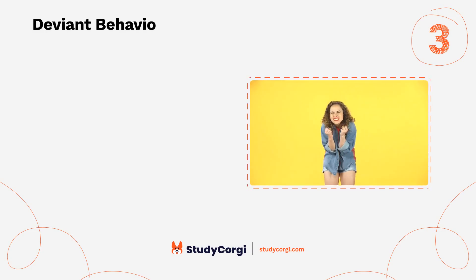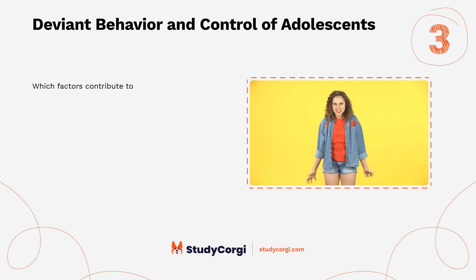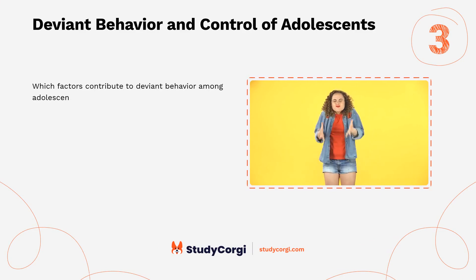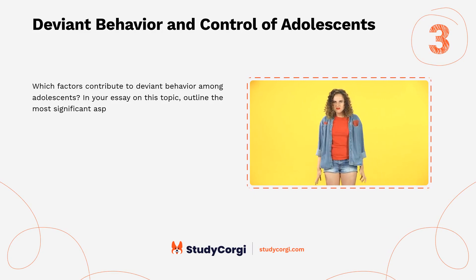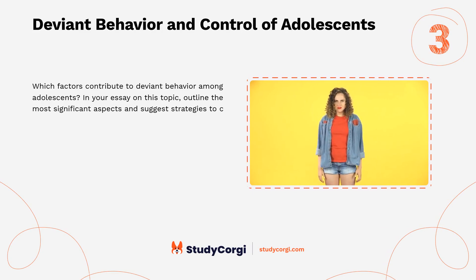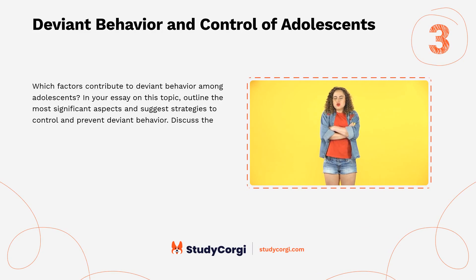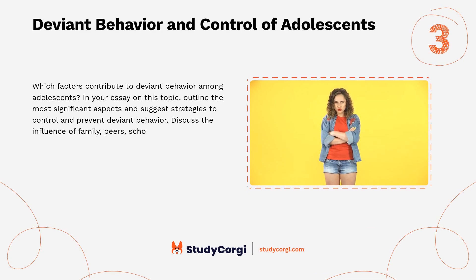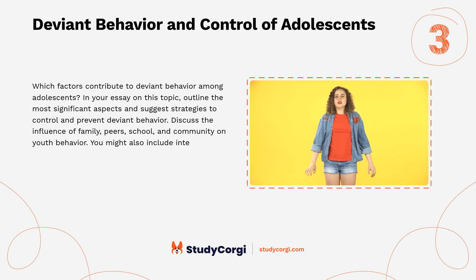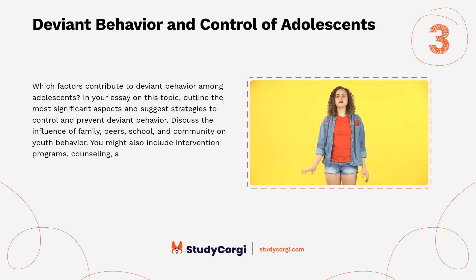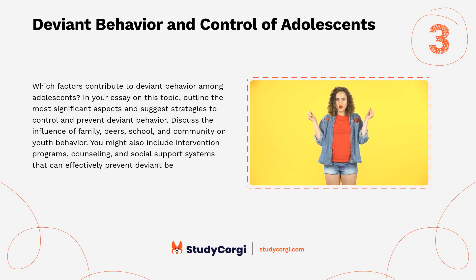Deviant Behavior and Control of Adolescents. Which factors contribute to deviant behavior among adolescents? In your essay on this topic, outline the most significant aspects and suggest strategies to control and prevent deviant behavior. Discuss the influence of family, peers, school, and community on youth behavior. You might also include intervention programs, counseling, and social support systems that can effectively prevent deviant behavior in adolescents.